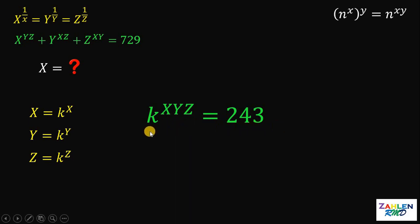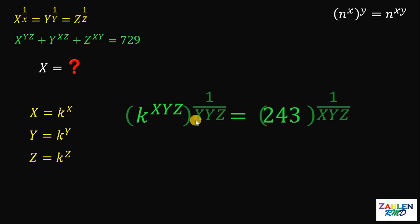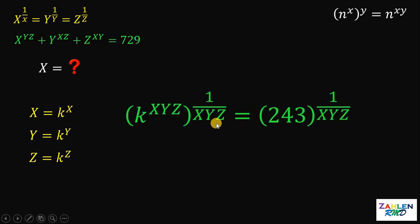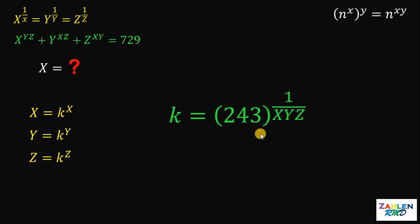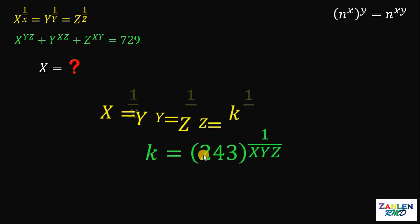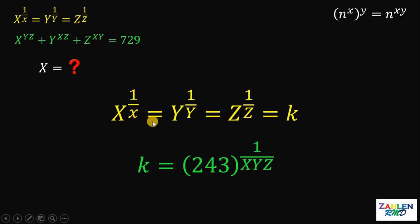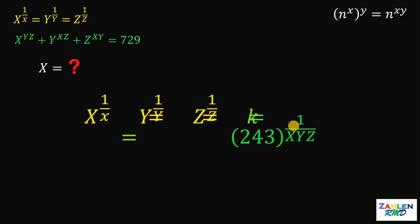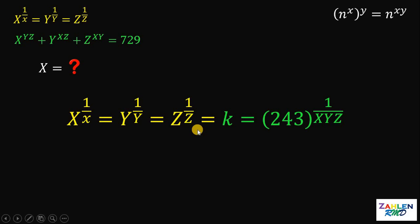Now let's solve for the value of k. To do that, we raise both sides by 1 over xyz. This gives us k equals 243 raised to 1 over xyz. Recalling that x raised to 1 over x equals y raised to 1 over y equals z raised to 1 over z equals k, we can say that all three expressions are equivalent to 243 raised to 1 over xyz.